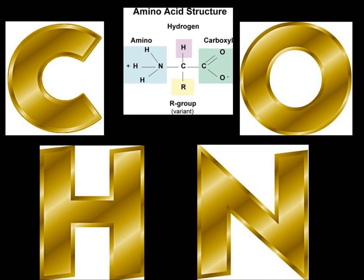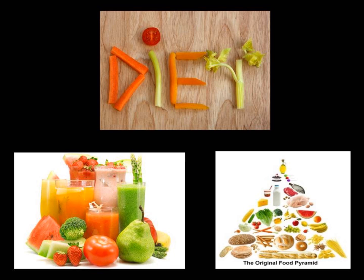Proteins are a class of nutrients composed of amino acids, smaller molecules made of carbon, hydrogen, oxygen and nitrogen atoms. These atoms mix up in different patterns to make different amino acids. Some of them are essential because they cannot be made by the body and must be taken in through diet. The rest can be made by the liver if all the necessary chemical components are available.